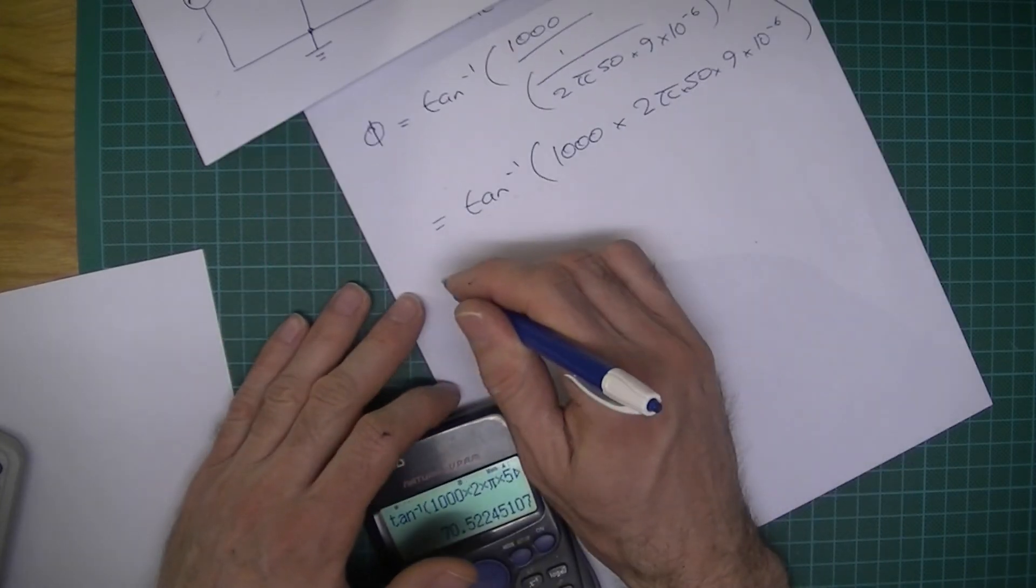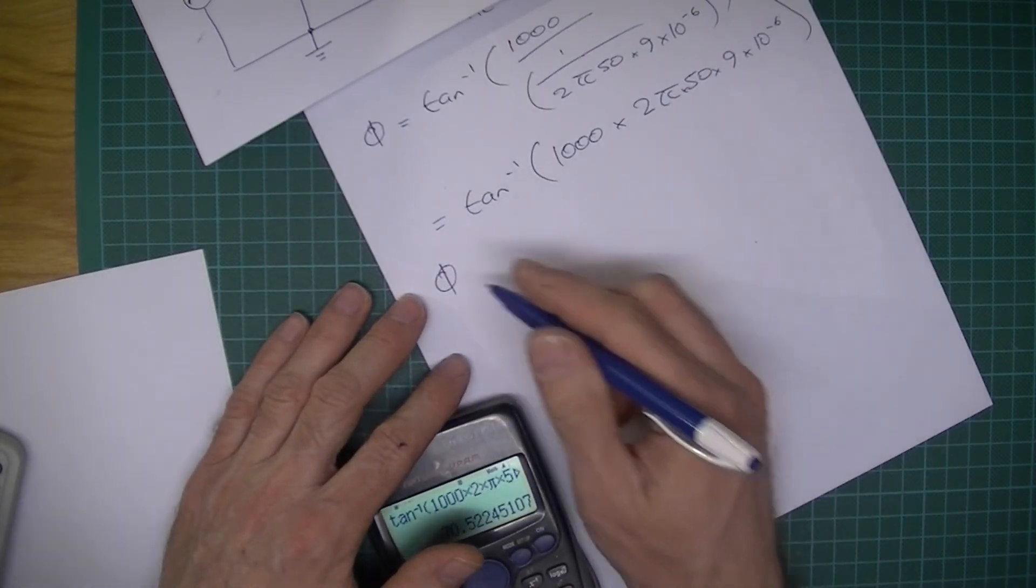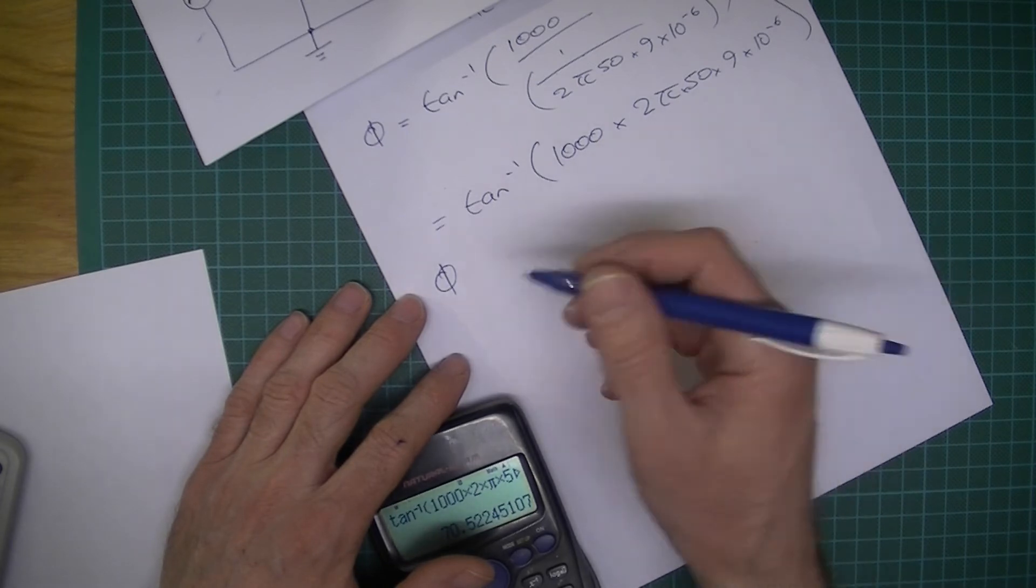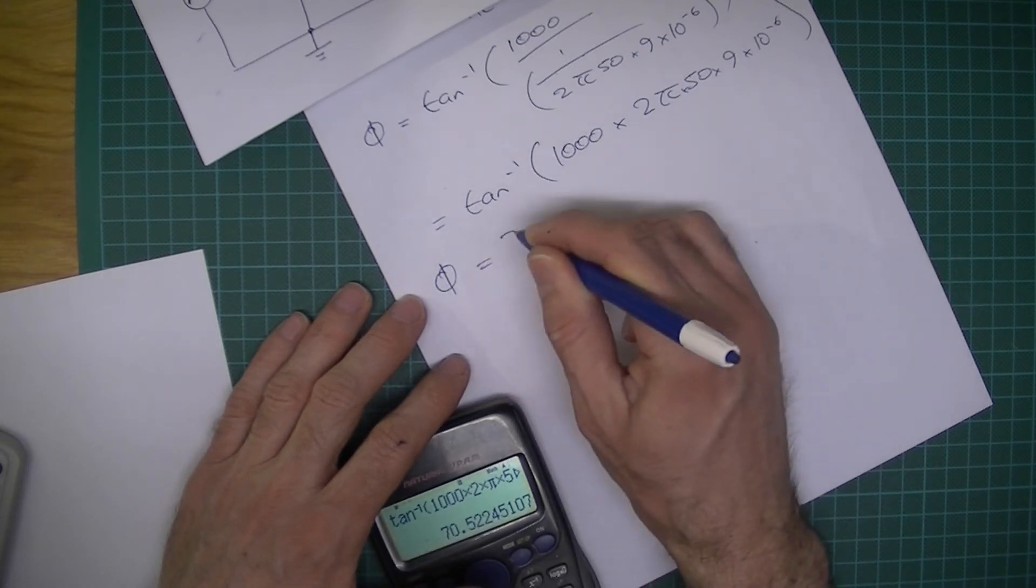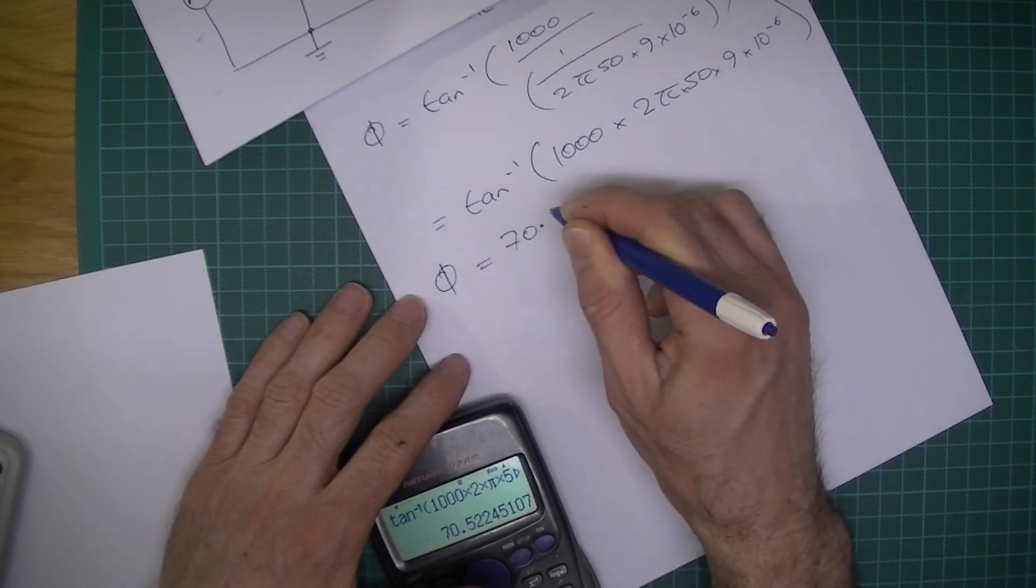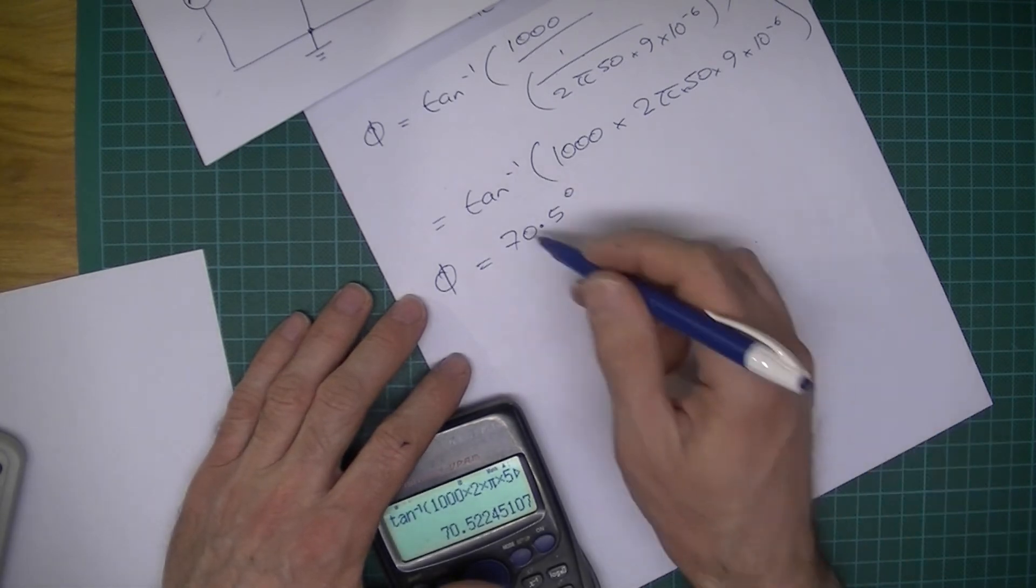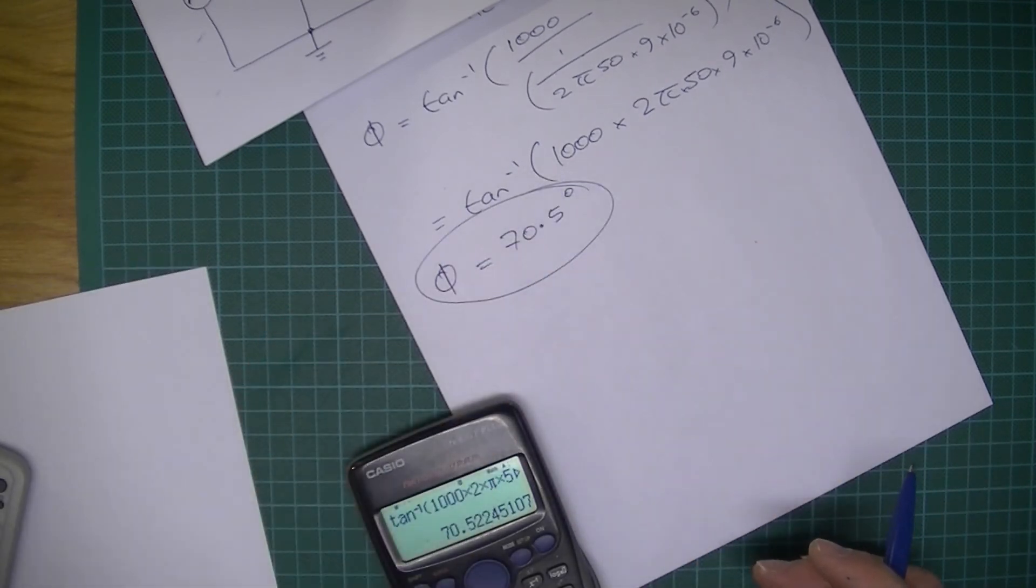So the phase offset or the phase angle equals 70.5 degrees. That's the answer, and that looks about right from what we saw on the oscilloscope screen.